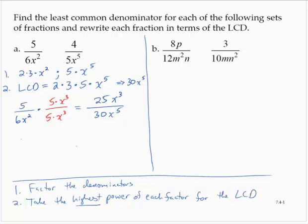Similarly, for the second fraction, 4 over 5x to the fifth, I need a denominator of 30x to the fifth. So I would just need to multiply by 6 in the numerator and denominator, giving me 24 over 30x to the fifth.